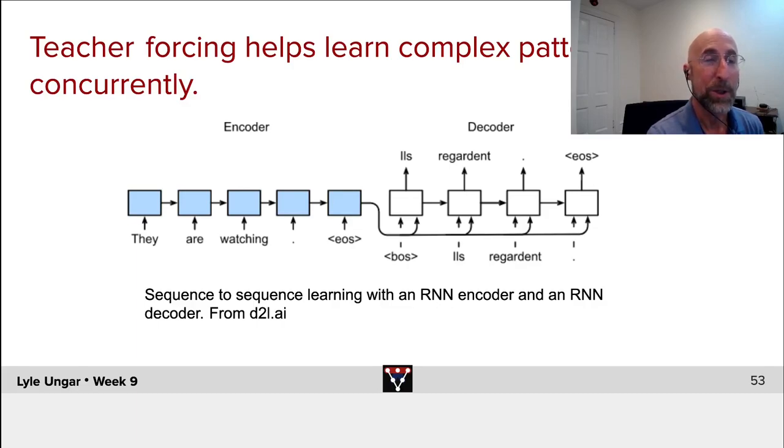Then the input to this could be either the word that was generated here, whatever it was, or it could even be the correct word that it should have been. Not what was predicted, but the actual thing that was the correct translation. Then it learns, given the same network. It's a copy of the same network. Hidden state plus the word il, regarde.